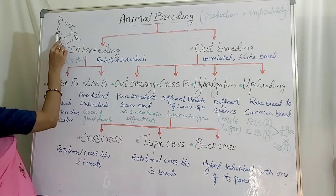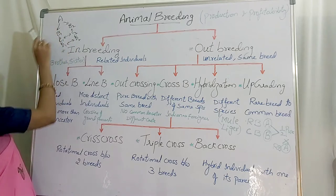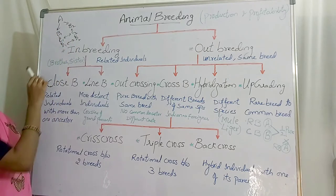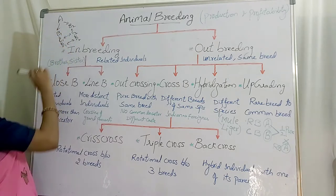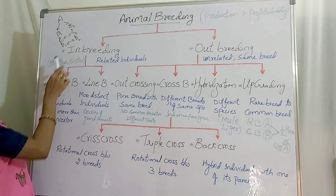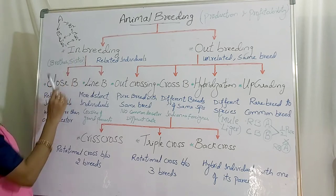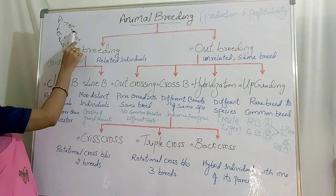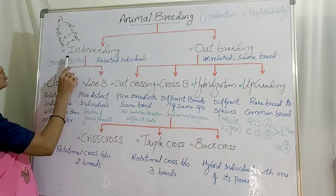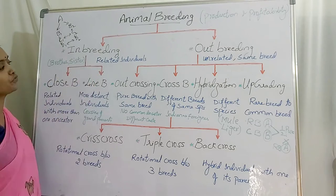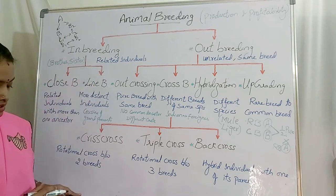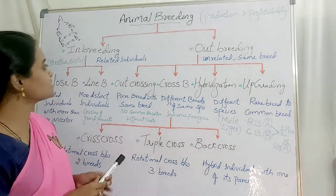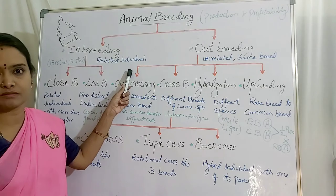Their parents belong to the same grandparents or great grandparents. So in case of inbreeding it is like brother and sister — mating between closely related individuals.